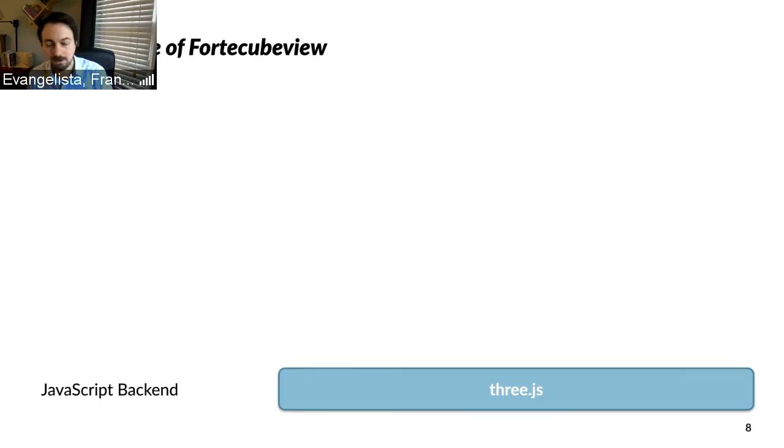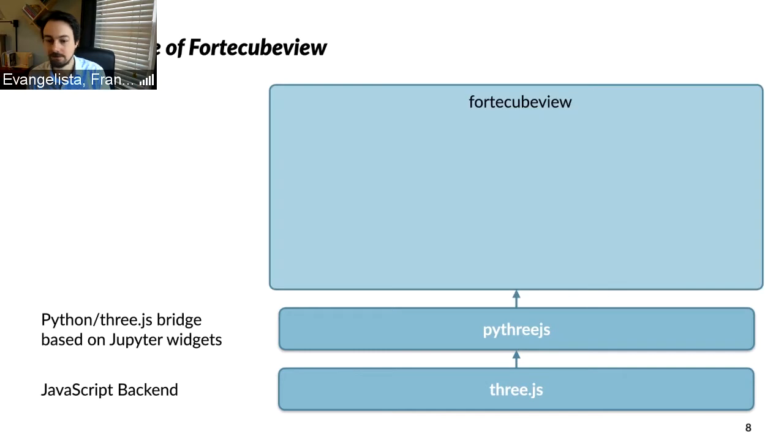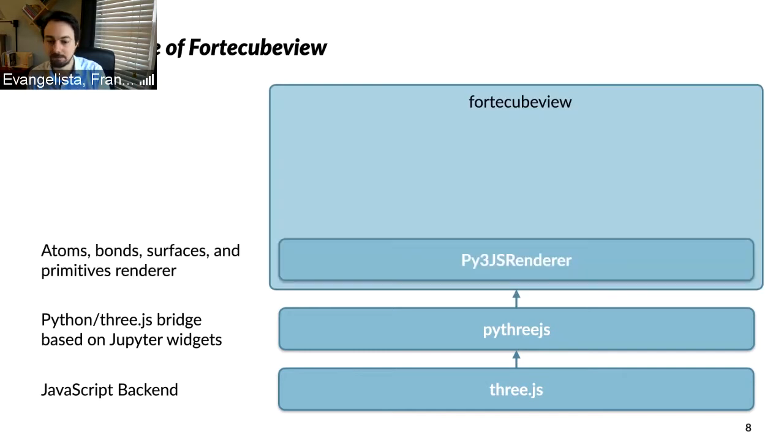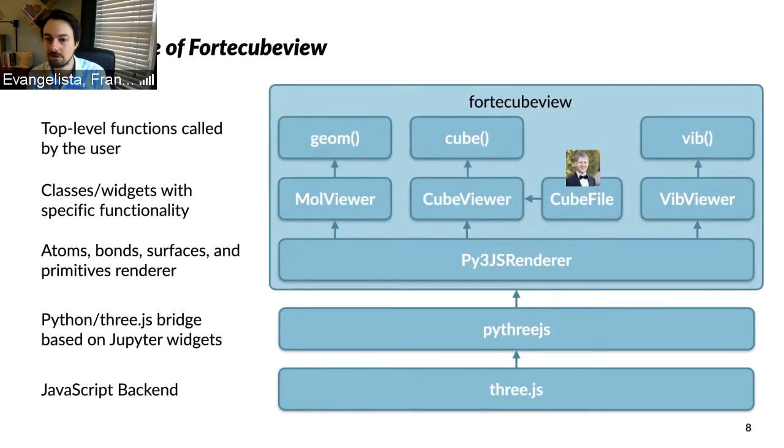So how is this built? Underlying ForteCubeView is the JavaScript backend 3.js, which is a 3D engine - it's fairly accessible now. Py3js is a bridge between the JavaScript and the Jupyter widgets as the interface that I use, and ForteCubeView is built on top of py3js. At the bottom there is a renderer which is a class that facilitates adding atoms or surfaces. Then there are a bunch of classes that take this renderer and specify and modify it. I'm using, for example, some of Andy Simmonett's code from Psi4 to read cube files, so I want to acknowledge this contribution. Then the user has these top level functions that allow you to do these operations.